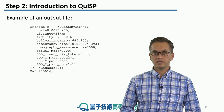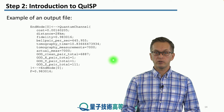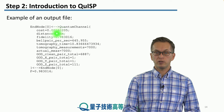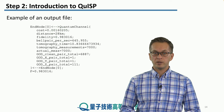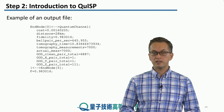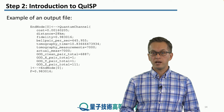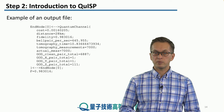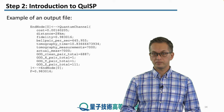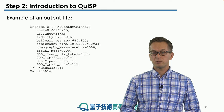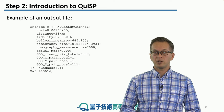This is an example output file. Here, we've got the distance between the nodes set to 28 kilometers, and the respective fidelities, the tomography time, and how many measurements were dedicated to the tomography process. This concludes our introduction to QISP. Let's jump into the types of errors that can occur in quantum networks.